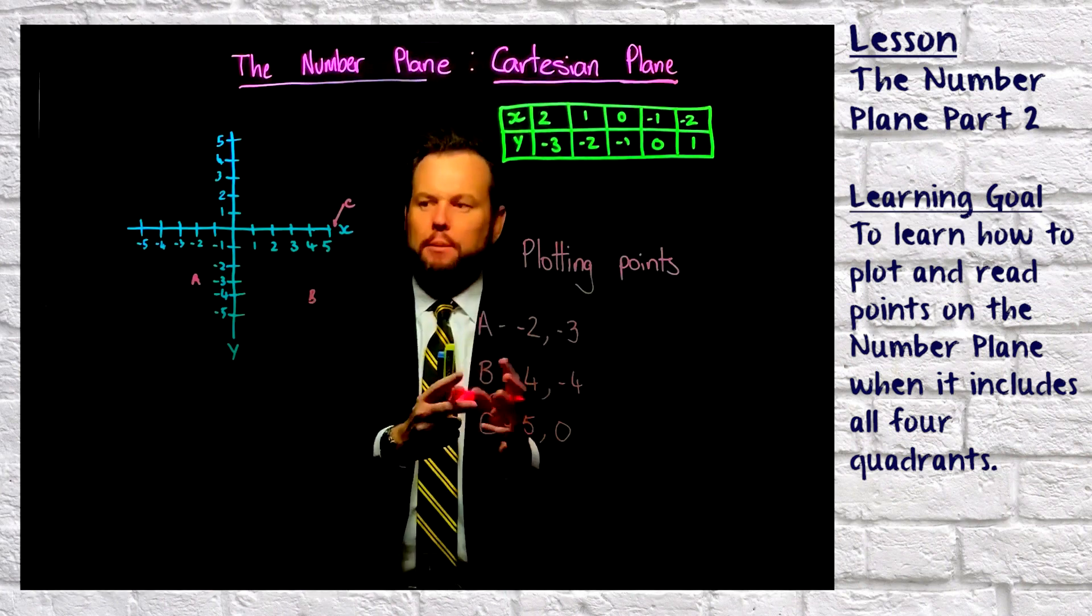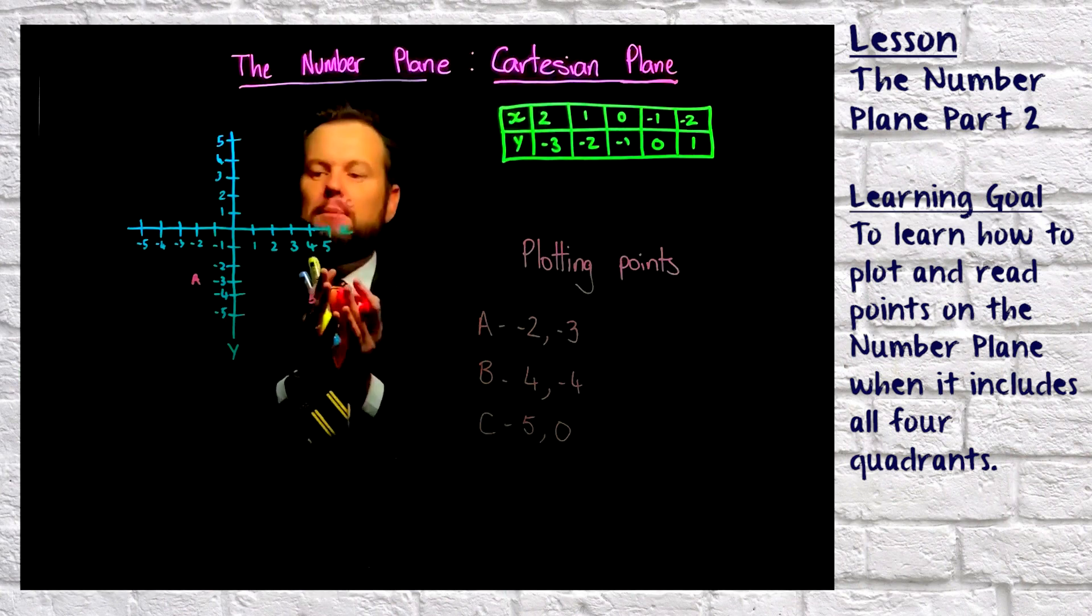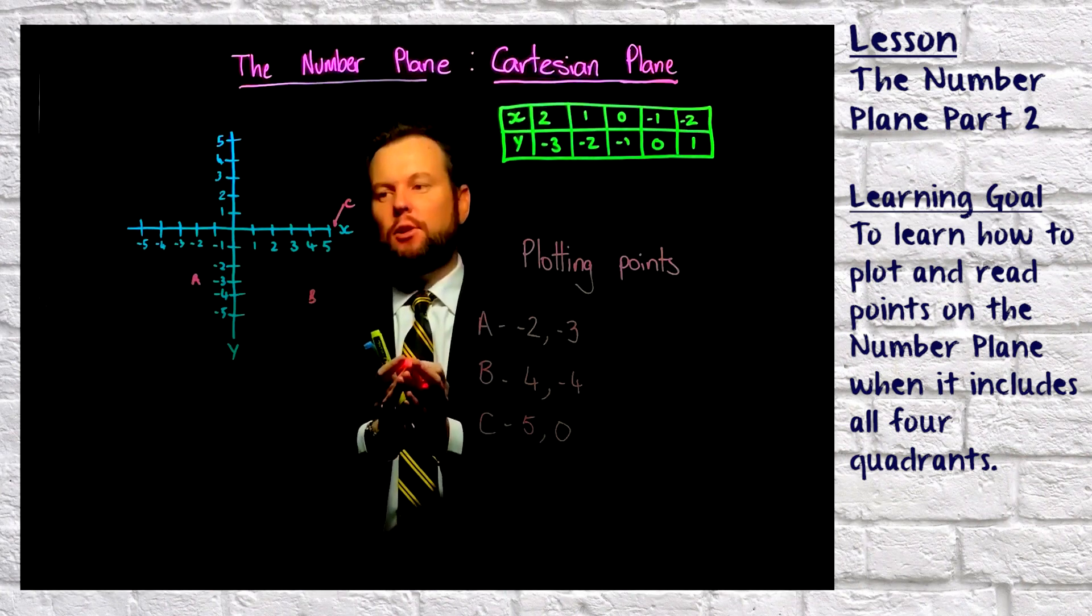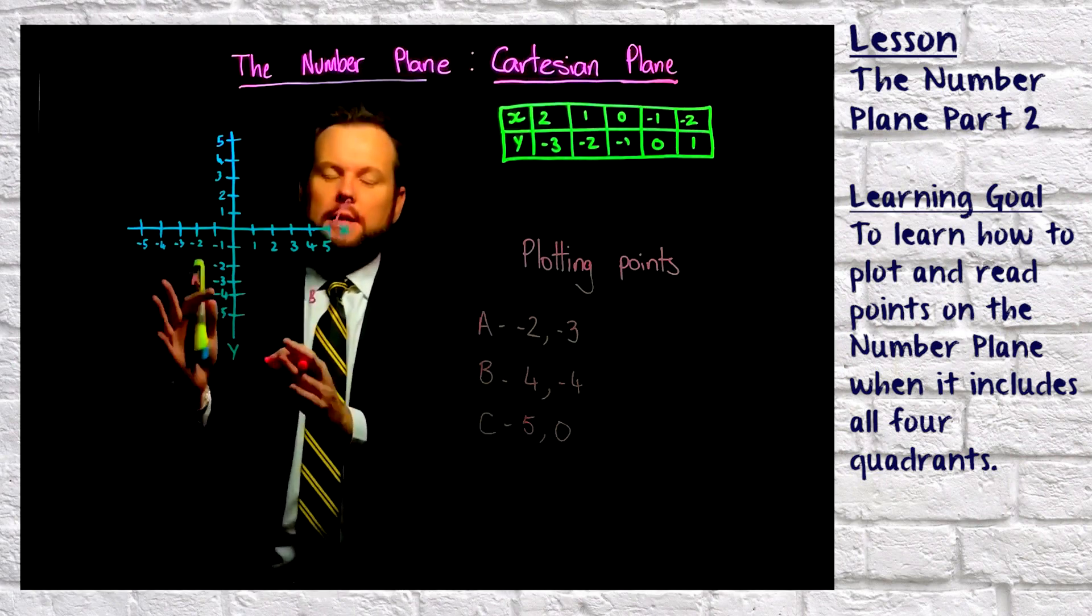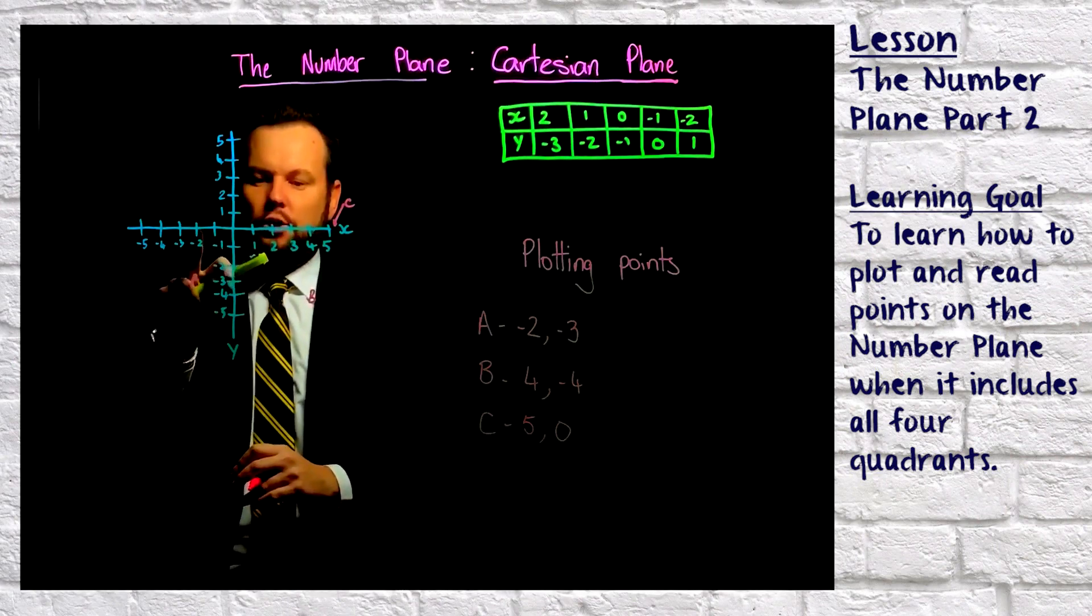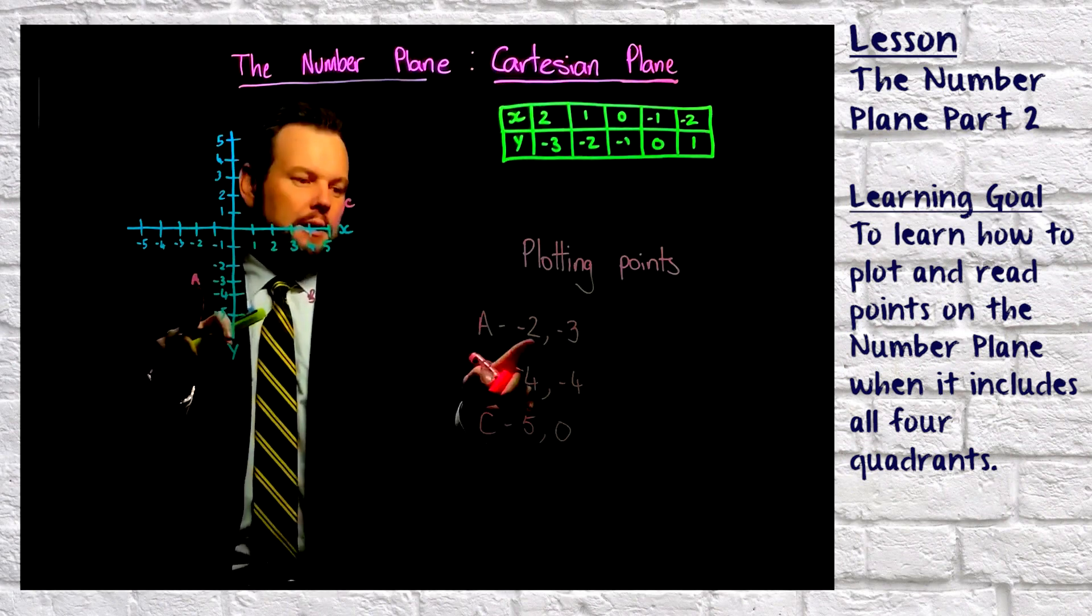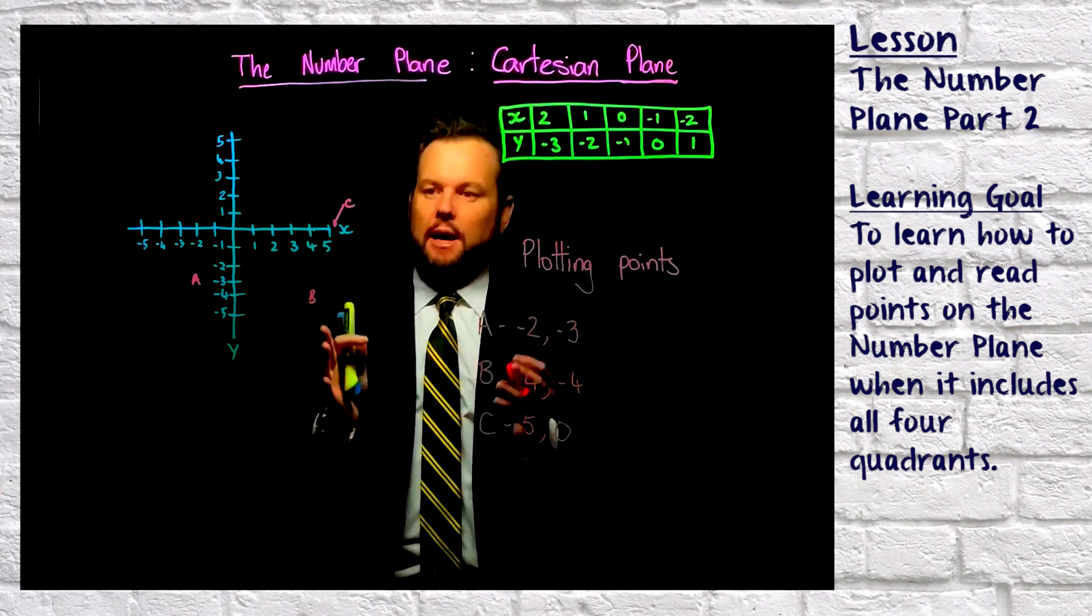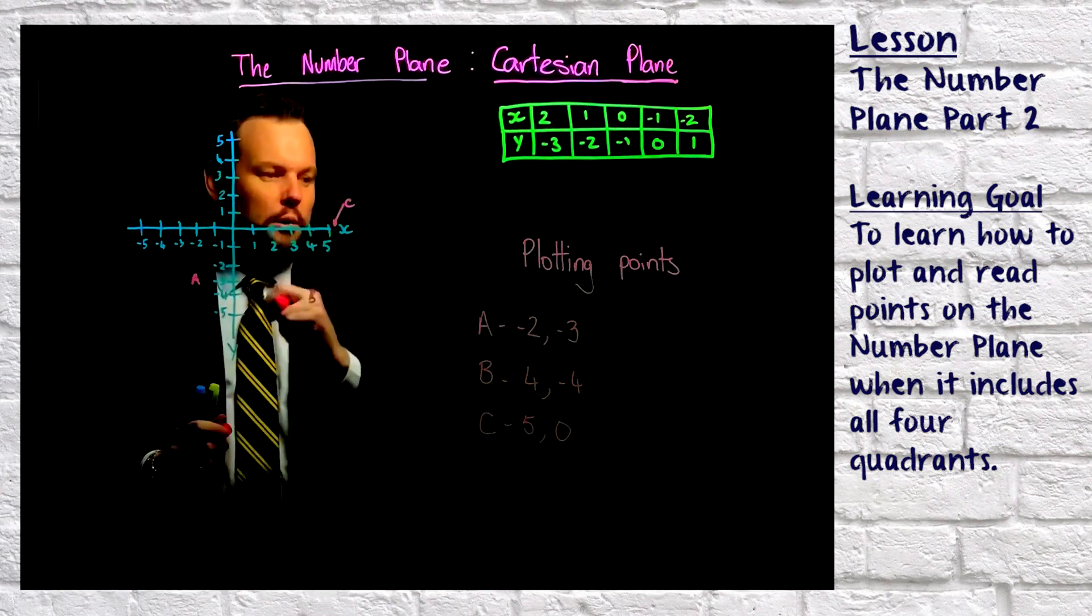So that's plotting points, and you would do the same thing if you were trying to identify where points are. So if the question asks write down where points A, B, and C are, you would look. You would go, okay, x-axis negative two, y-axis negative three. So you always start with the x-axis first. Crawl before you climb.